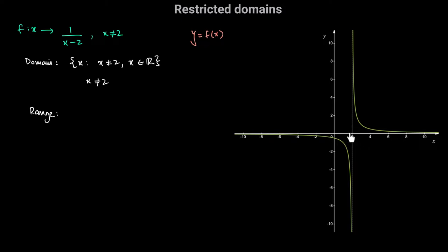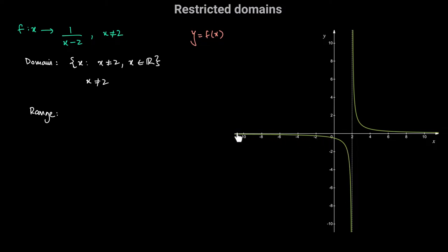Similarly, if we go to the left of x equals 2, and x is only slightly smaller than 2 — say 1.9999 — we're dividing 1 by negative 0.0001, giving a very large negative value. As x becomes more and more negative, we're doing 1 divided by a very large negative number, so the value stays negative but gets closer and closer to 0. Again, it never equals 0, because 1 divided by something will never give us 0.